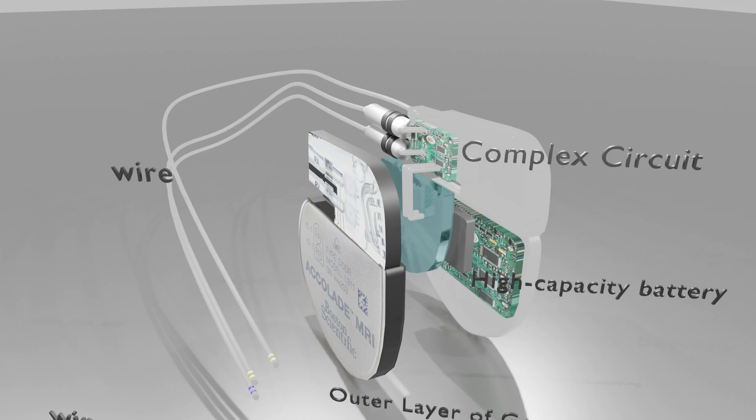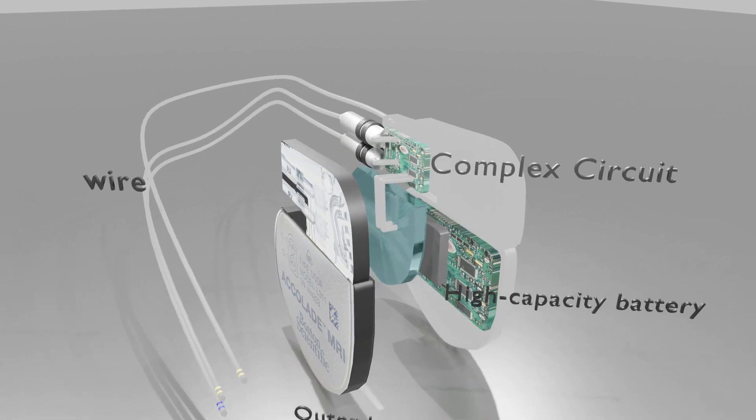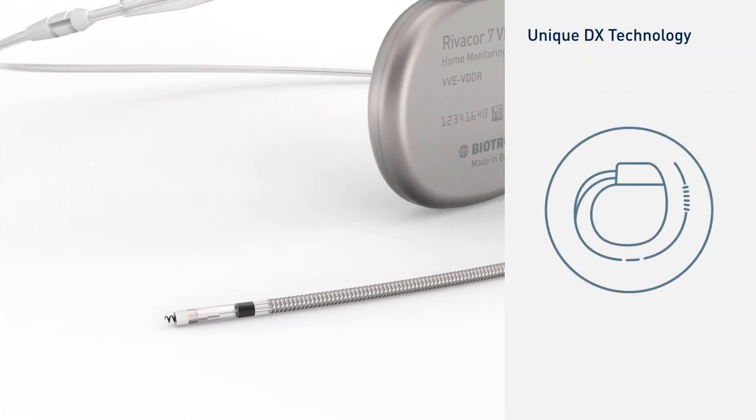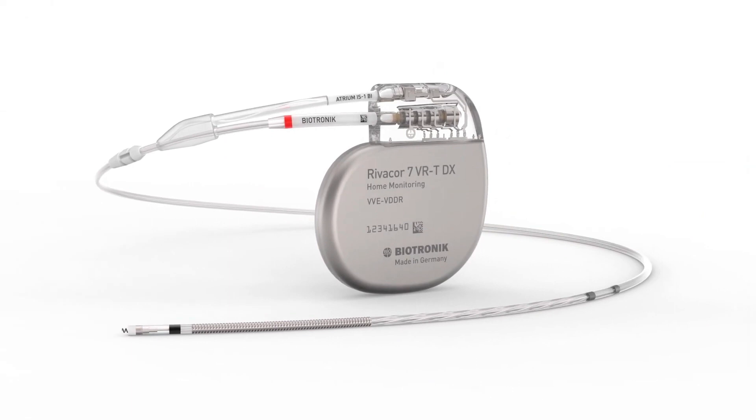The fourth component are the leads. The electrodes are wires, also called leads, that go through your veins to your heart. They connect your heart to the rest of the device. Your ICD may have one, two, or three electrodes.